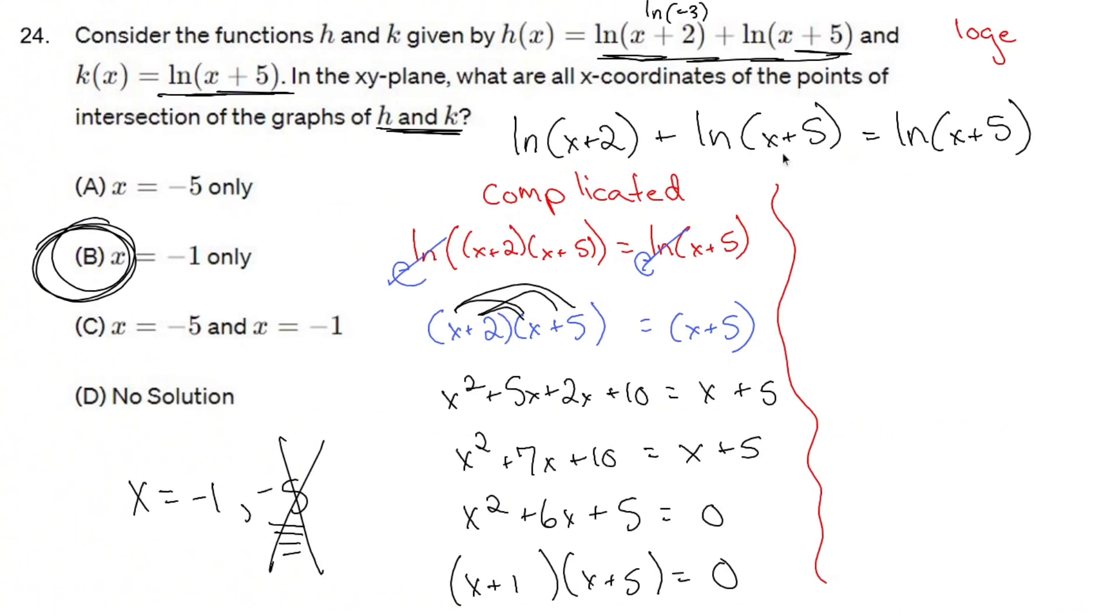If you notice right away that you have ln on the left and ln on the right, they just cancel each other out because you can subtract ln of x plus 5 from both sides. So you have ln of x plus 2 equals nothing.